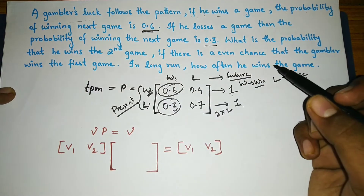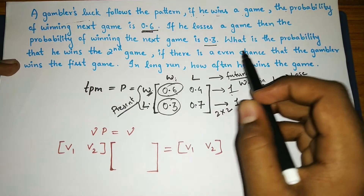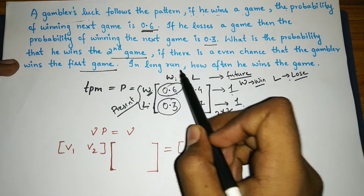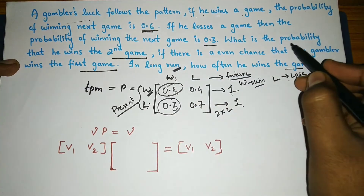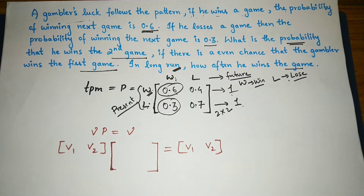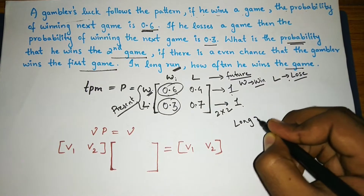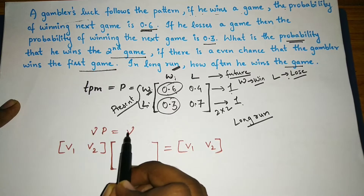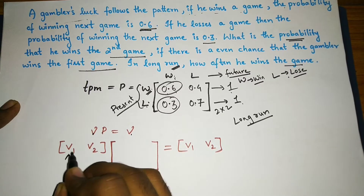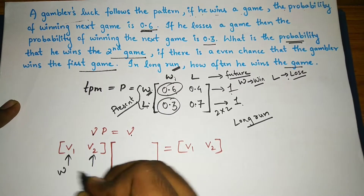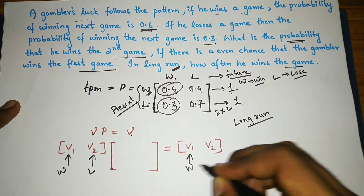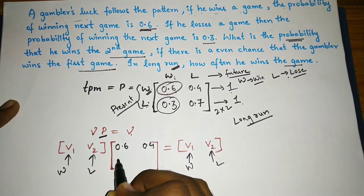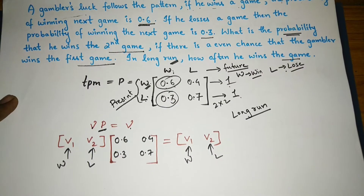Those two quantities were given in the question. Now there are two parts: what is the probability that he wins the second game given an even chance in the first game, and in the long run how often does he win. Let us first find the long run. We use fixed probability vectors where vP = v, with v = [v1, v2], where v1 is for winning and v2 is for losing. P is the TPM: 0.6, 0.4 in the first row and 0.3, 0.7 in the second row.